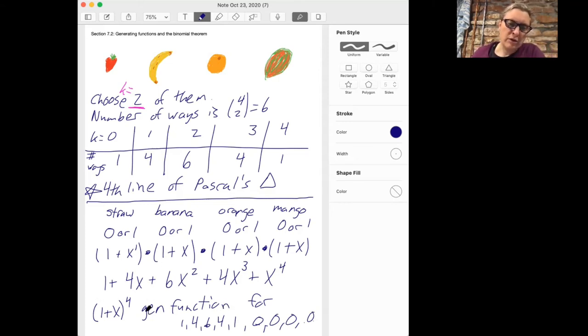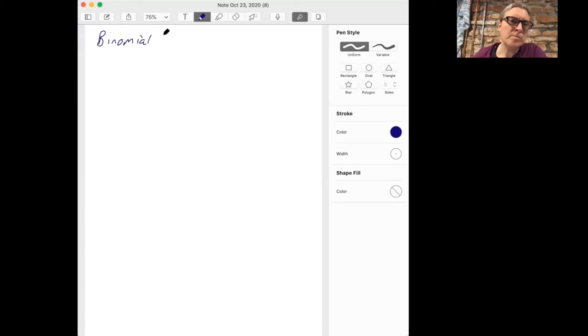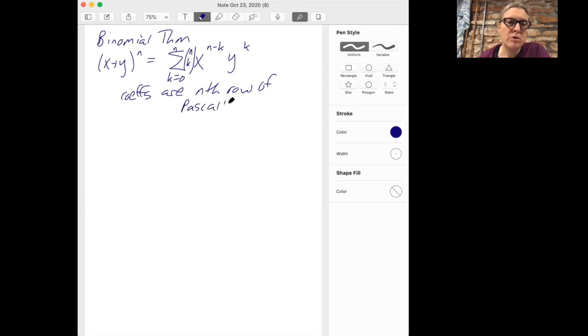And this is another way of saying the binomial theorem. It's sort of a variation on the binomial theorem. So remember what the binomial theorem said was that if we look at (x+y) to the n, then this is the sum of x to the (n-k) times y to the k times the coefficient n choose k as k goes from zero to n, which is a fancy way of saying that when you expand this, the coefficients are the nth row of Pascal's triangle because that nth row is all the binomial coefficients n choose k as k goes from zero to n.